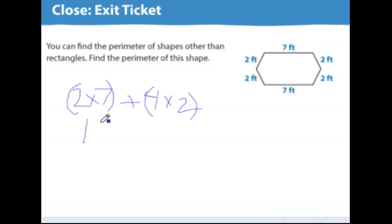So here's 14. Two times seven plus four times two we know is eight. And 14 plus eight is 22. And our unit on this one is feet. 22 feet around our six sided figure. This is a hexagon. So we have 22 feet around the hexagon.